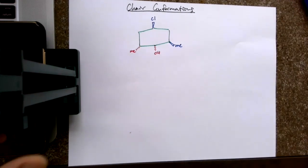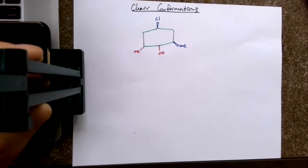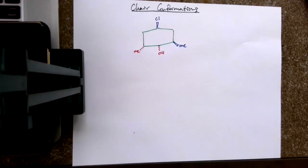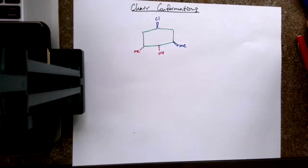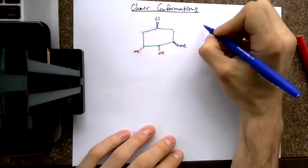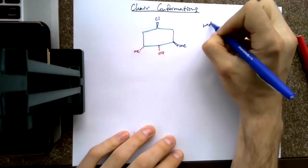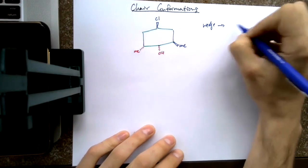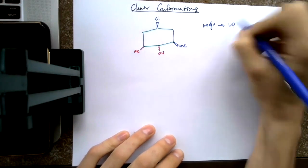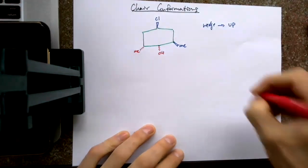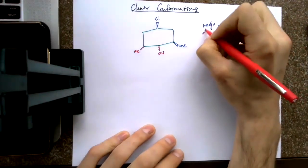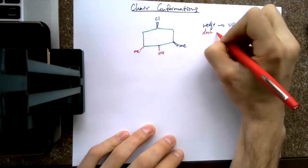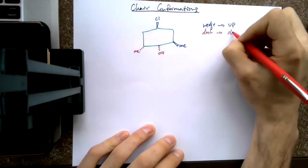I thought it'd be good to do a little video on how I do chair conformations. The big thing we have to keep in mind is that when we draw a wedge, that means up. When we draw a dash, that means down.